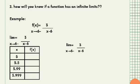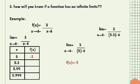We substitute values of X approaching 6 from the left. Substituting x = 5: 3/(5 − 6) = −3. Substituting x = 5.5: 3/(5.5 − 6) = −6. Substituting x = 5.99 gives −300, and x = 5.999 gives −3,000.